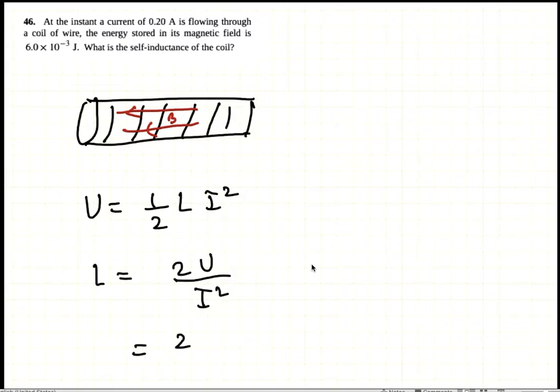2 times 6 into... So the energy stored is 6 millijoules. The current is 0.2 amps.